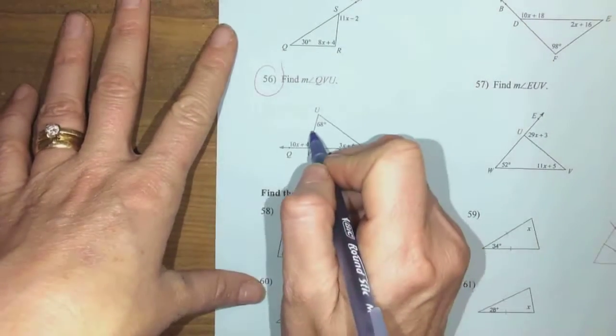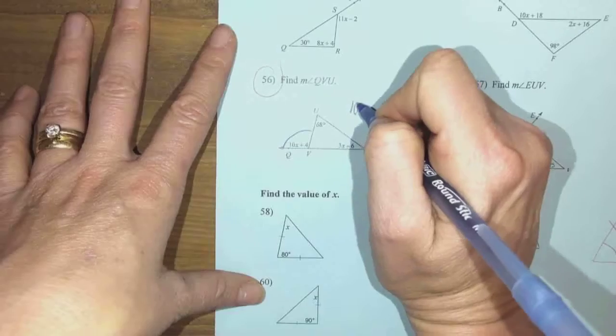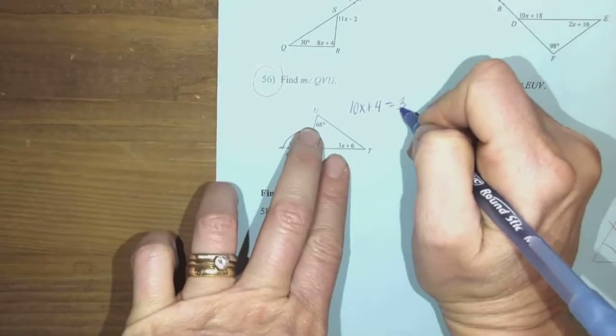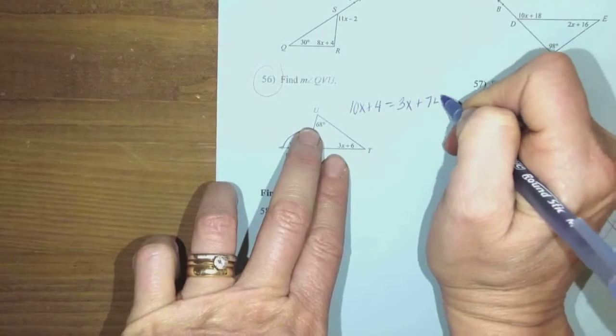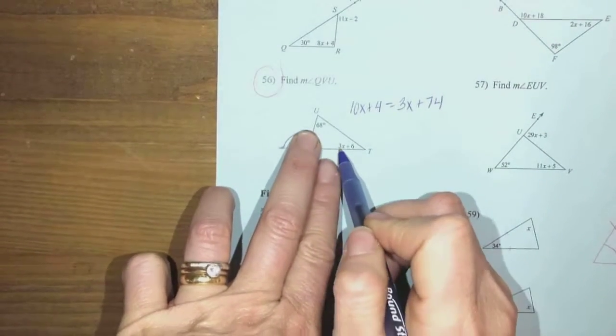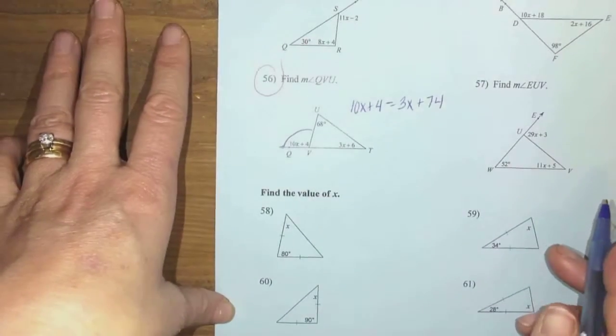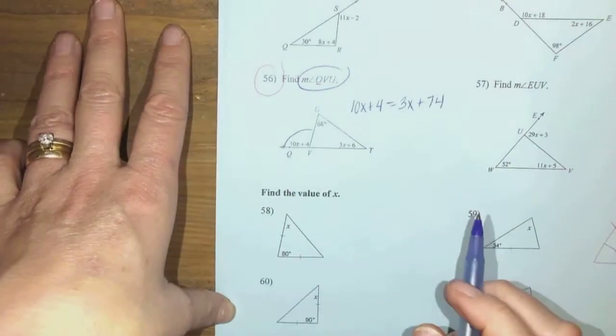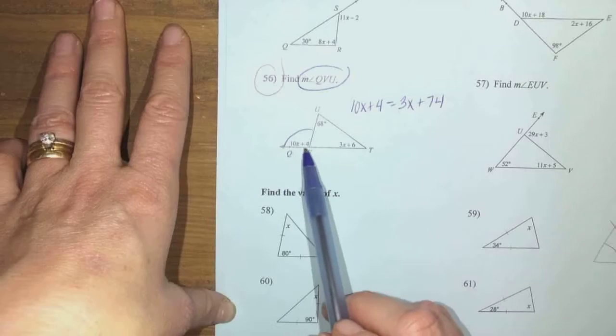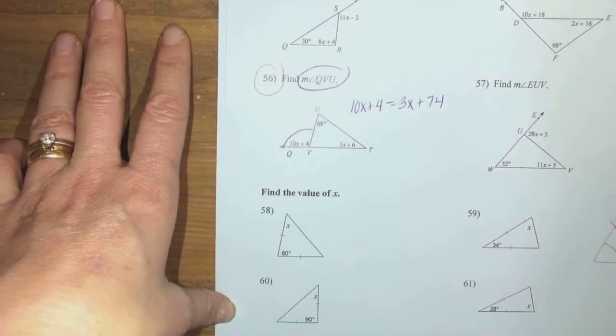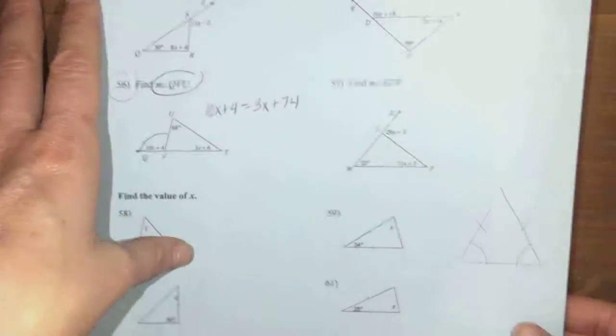Number 56, same thing here. I see an exterior angle and it equals two interior put together. So if I put 3x and 6x plus 6 together for the 74 and I solve, the big thing is for this one I don't just want x. I want the measure of angle QVU, so once you solve for x, plug it back in to tell me what the measure of that one is.